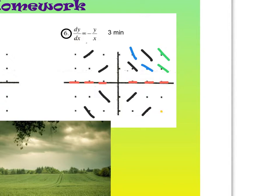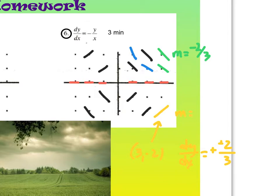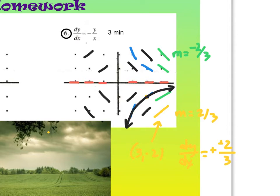Let's do the point (3, −2). To find dy/dx algebraically: take y = −2 over x = 3 and make it negative, so those cancel and I get a slope of 2/3. That makes sense — the slope up here was −2/3 and the slope down here is positive 2/3, so there's symmetry going on. This would be a slope of 1/3, and this would be 1/2. And if this were my initial condition, I would say the particular equation that fits that would look something like that.